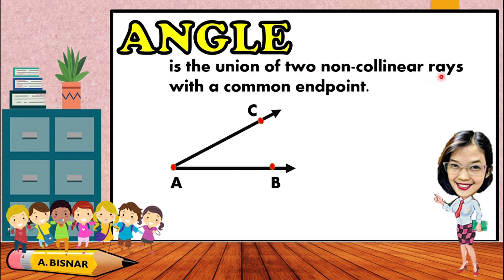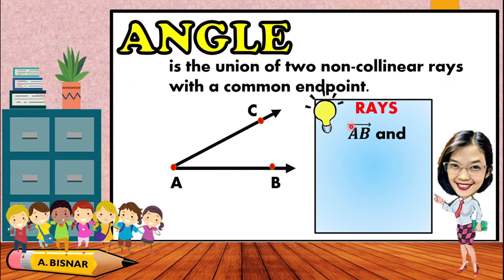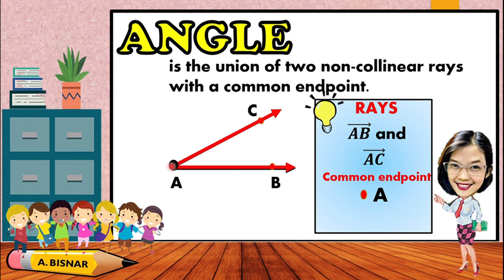An angle is the union of two non-collinear rays with a common endpoint. As you can see in the illustration, an angle has two rays — ray AB and ray AC. When naming a ray, we must start with the endpoint, which is why they are named ray AB and ray AC. Point A is their common endpoint. If two rays have different endpoints, they cannot form an angle.